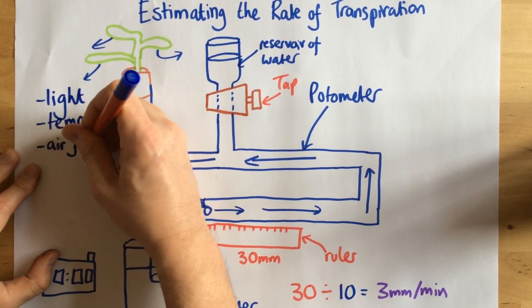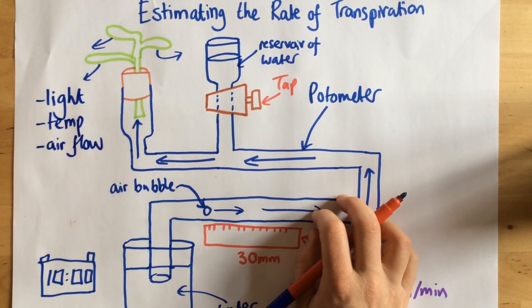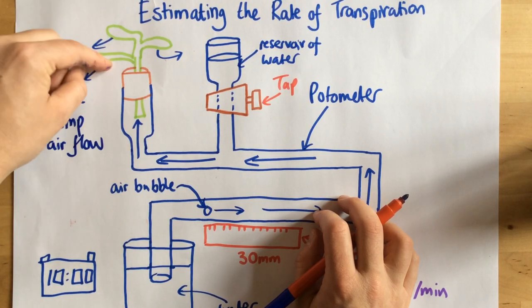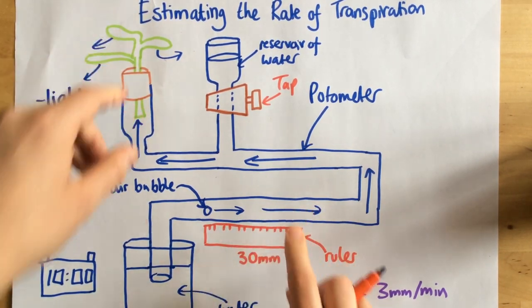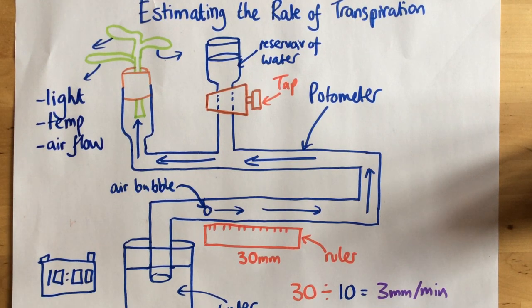And finally, something else I could change, I could change the airflow. So I could see if I've got a fan blowing on this, how does that affect the rate of transpiration? But that essentially is it.